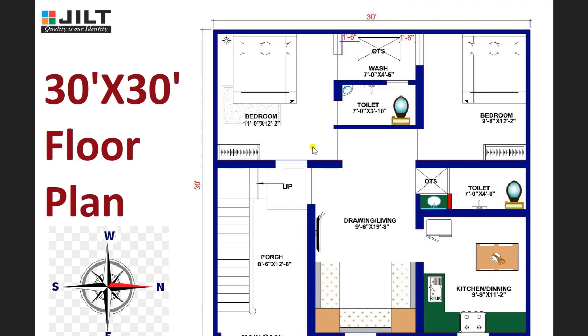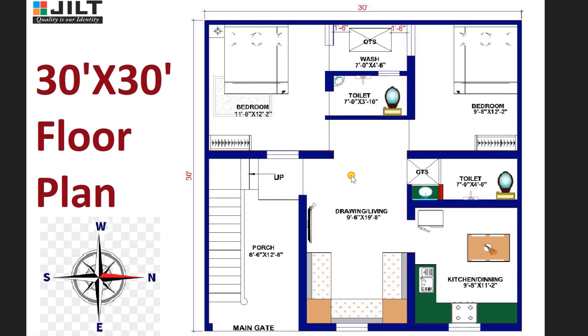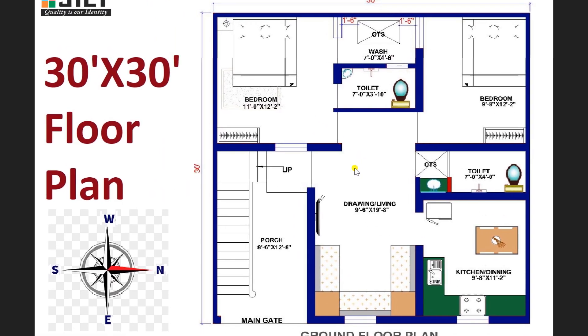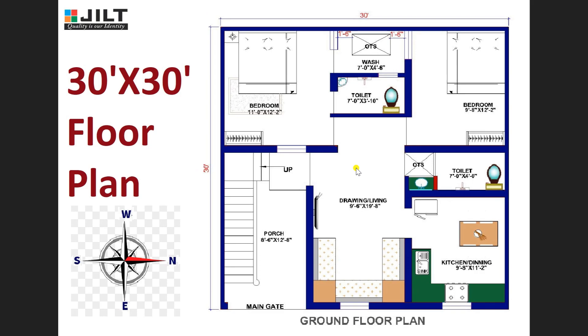This is a very comfortable plan for a dimension of 30 by 30 feet. This is a very suitable plan for a small family who want a 2 BHK in 100 square yards.